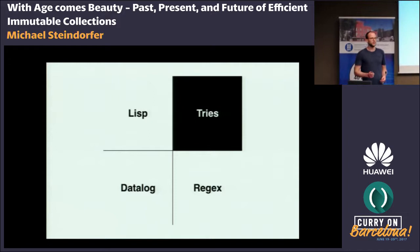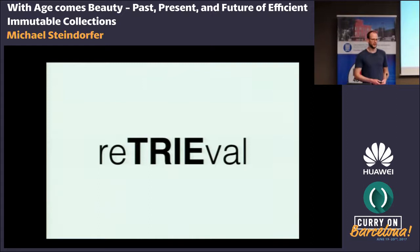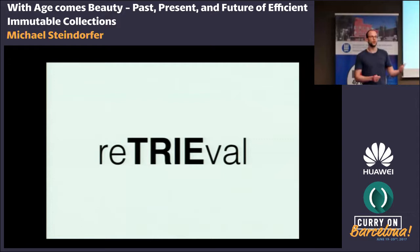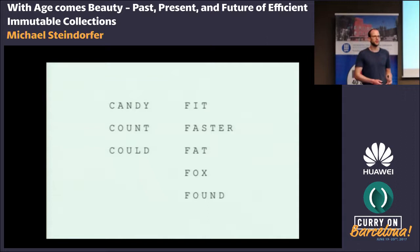What are Tries? The name 'Trie' comes from the word 'retrieval.' It's a data structure that lets you store, search, and delete data — you can imagine it as a set data structure. Tries have one particular property that makes them interesting: they encode the prefix of the search keys that you put into them.